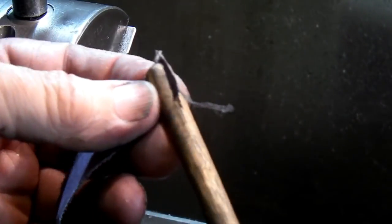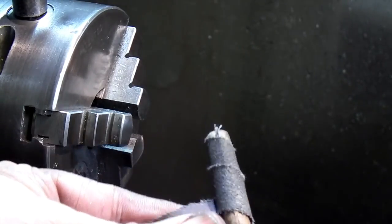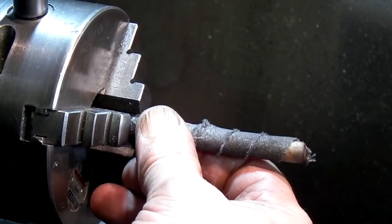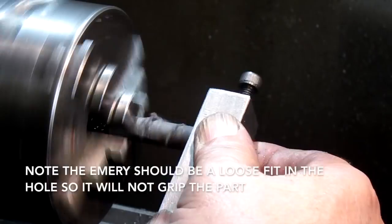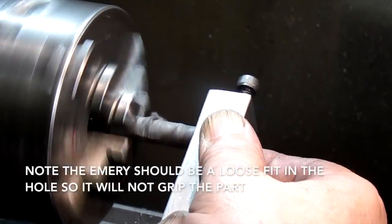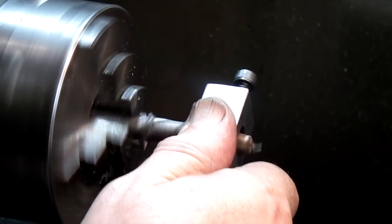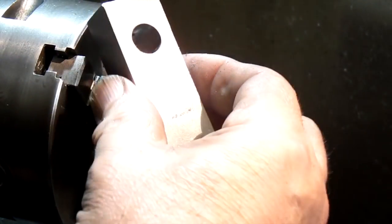There's a piece of emery cloth in a stick, just turn it round and hold it in the chuck on the emery cloth so it doesn't twist, and it polishes the bore up so you get a nice fit.